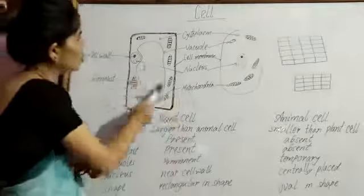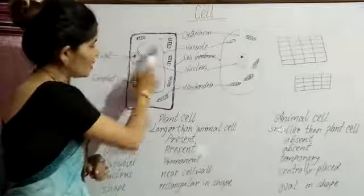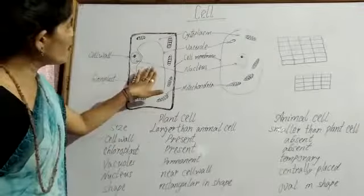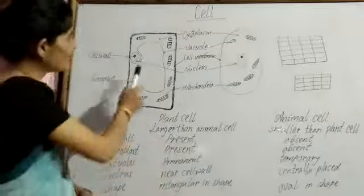It is vacuole. You can see here big part. It is vacuole, filled. It is permanent in plant cell and it can be seen easily.